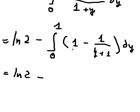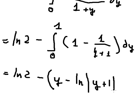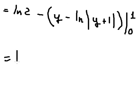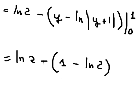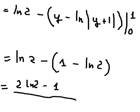The integration of number 1 gives y, we have like this. So negative and negative gives positive, so we have 2 ln 2 minus 1, and this is the final answer. This is the end, thank you for watching.